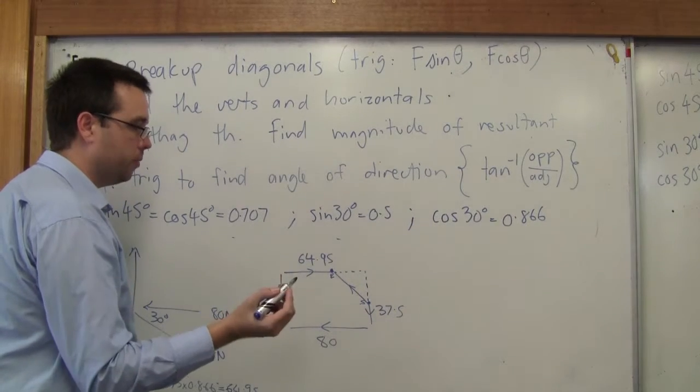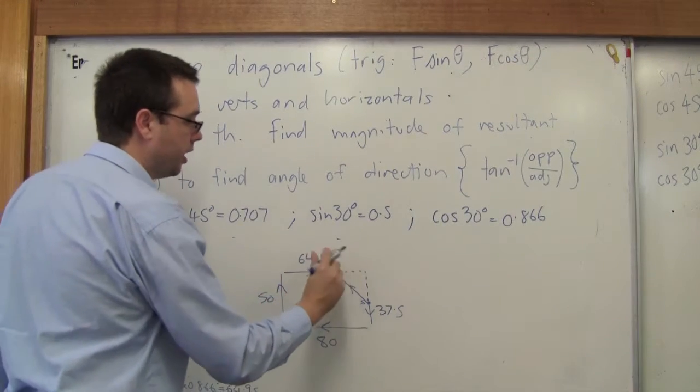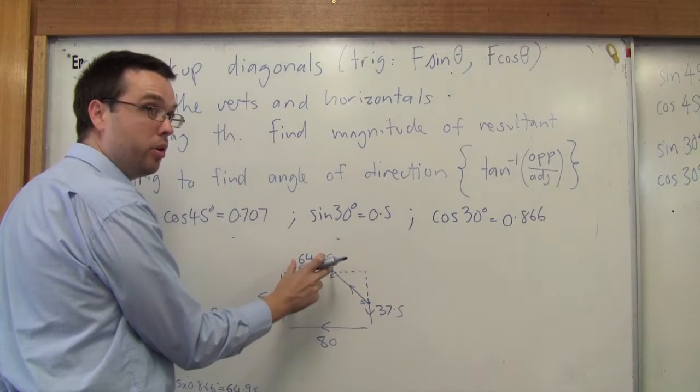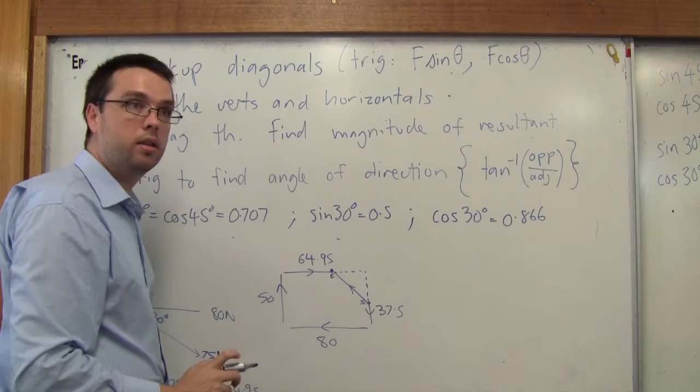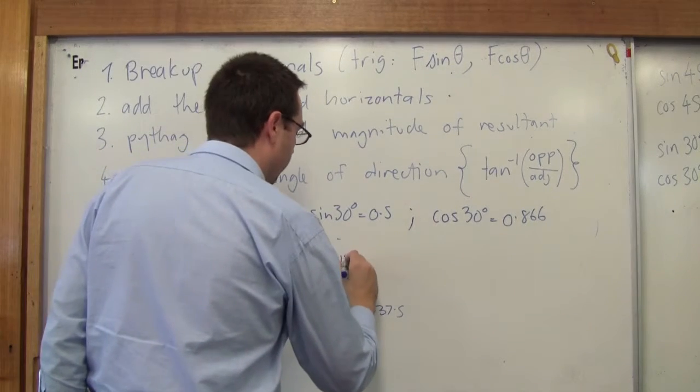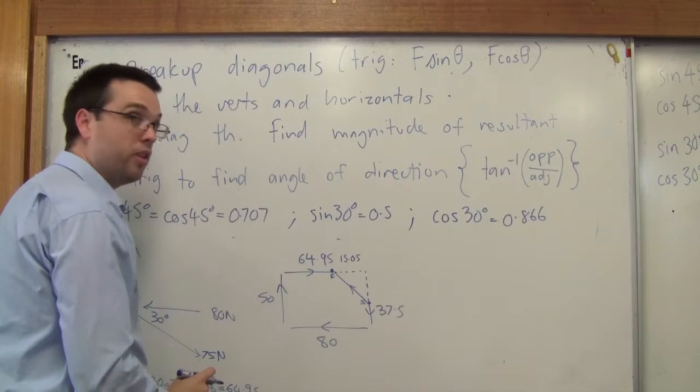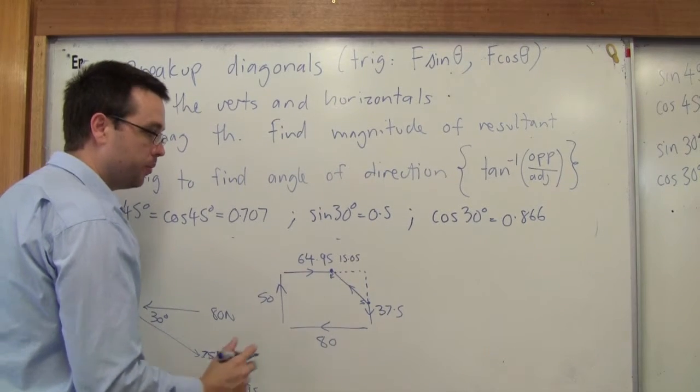Okay, so what are our values here? What are we missing? What do I need to add to 64.95 in order to get to 80? 15.05. Okay, what do I need here to get to that value? 12.5.